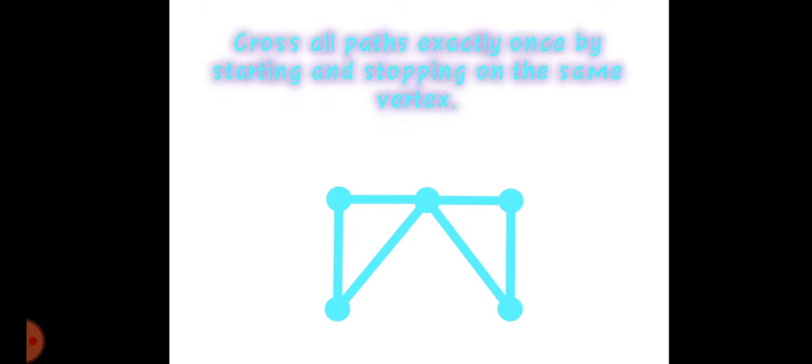We will just need to cross all lines or paths exactly once by starting and returning back to the original point or vertex. For example, we start here. You need to keep in mind that you will need to use all the lines.